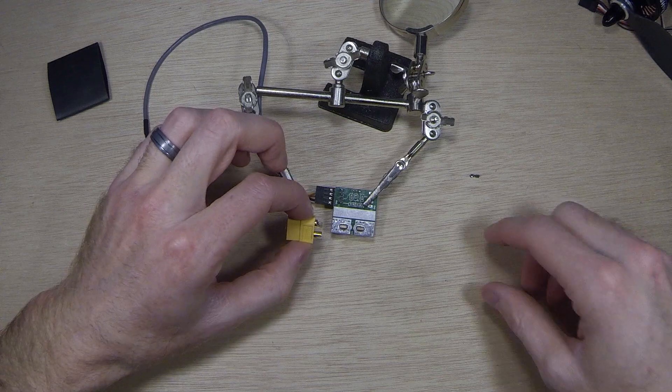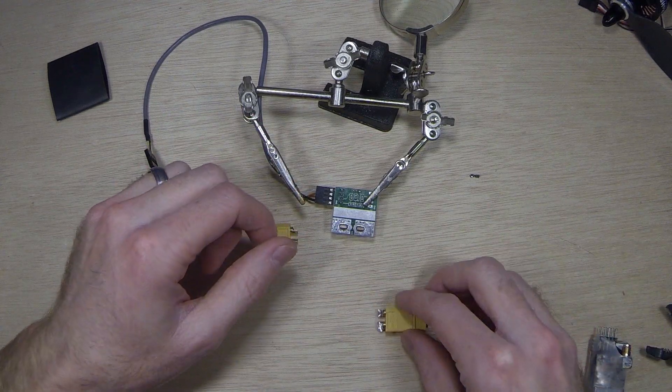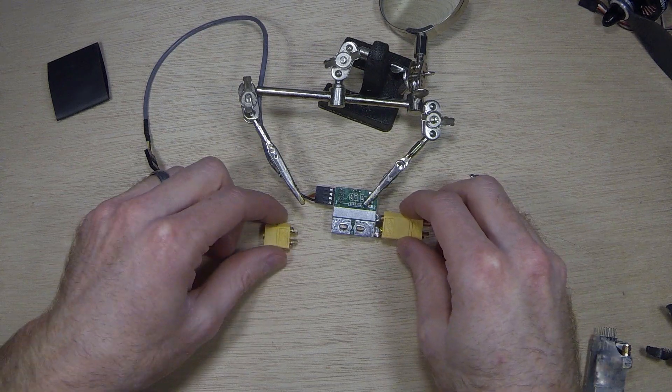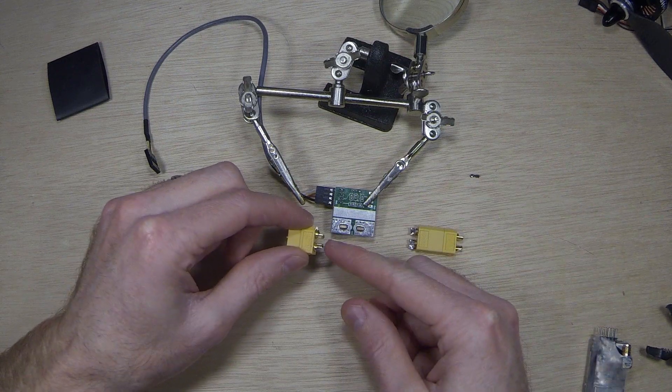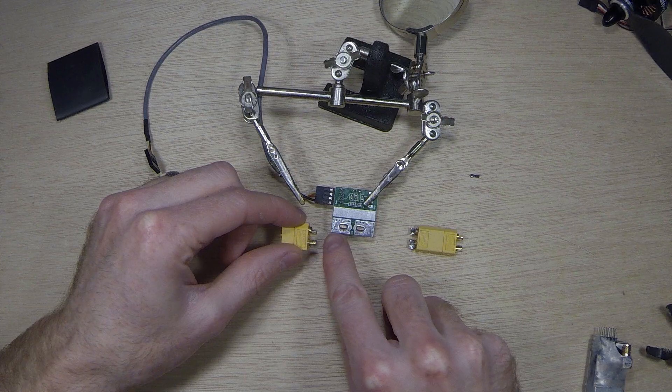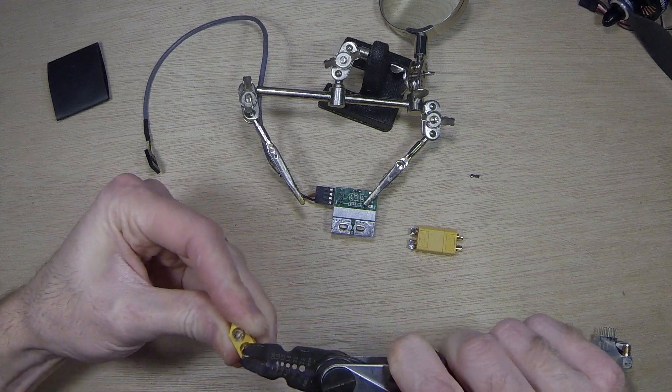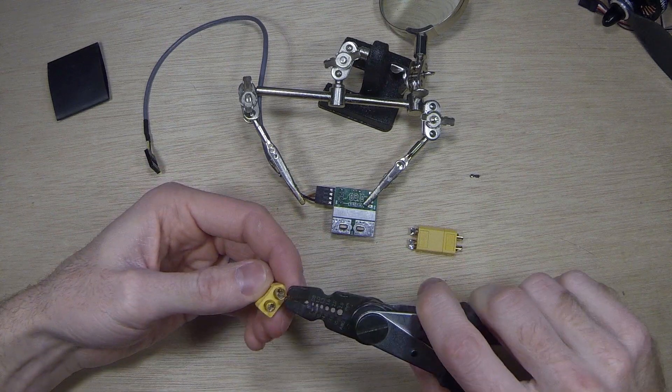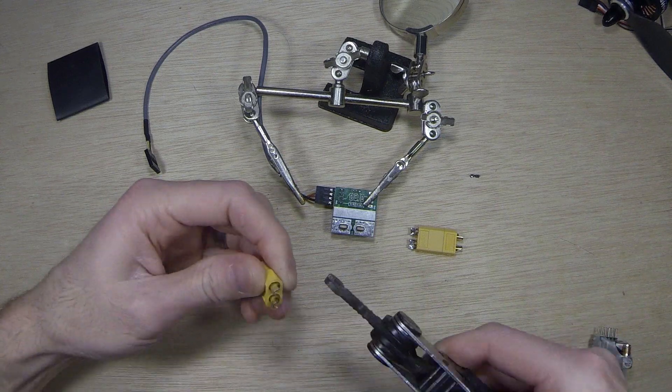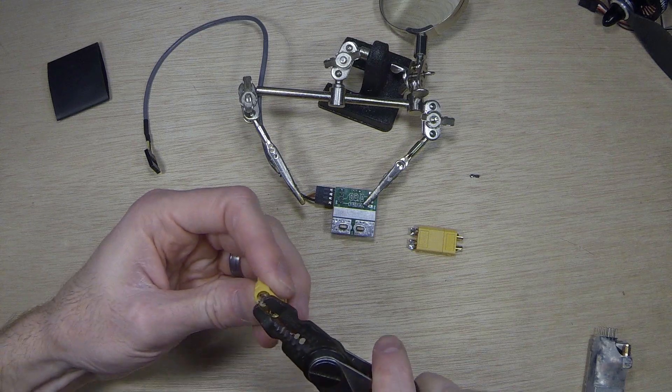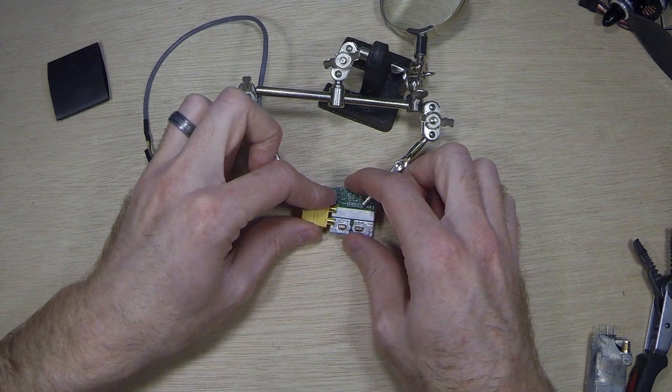So right here we have the current sensor and we have the two connectors that are going to be going on this. Right now you'll see that the connectors are upside down and this one they're going sideways. So to properly solder them onto here, if you straighten these out so that they're flat, they can sit right on there.